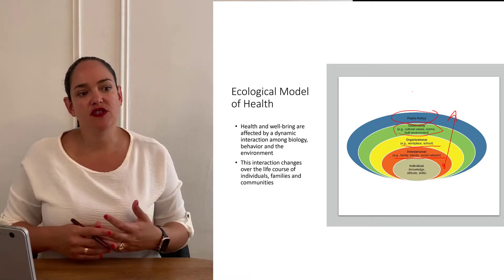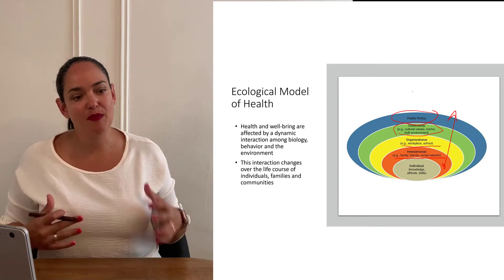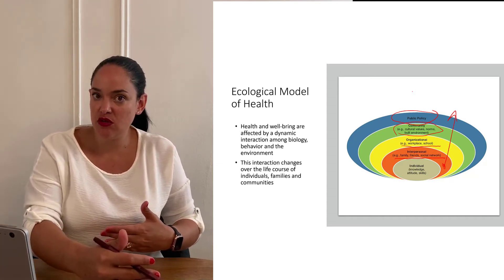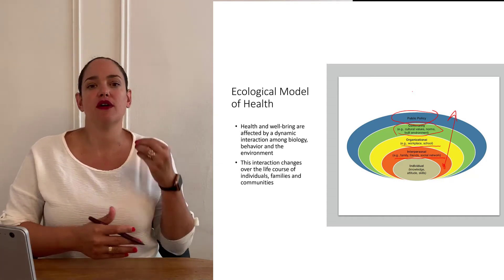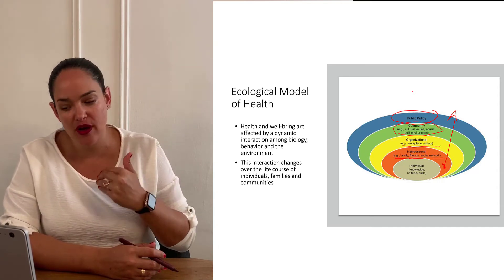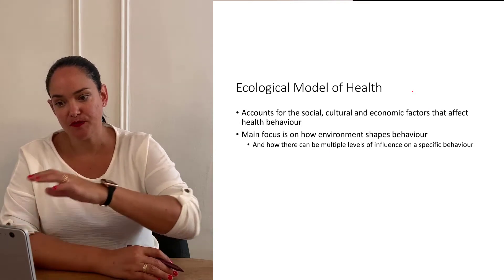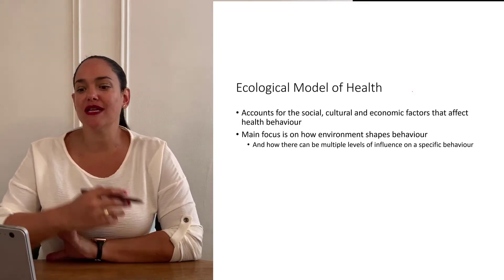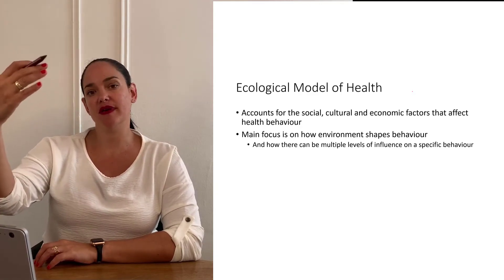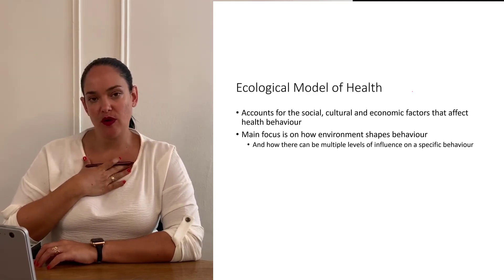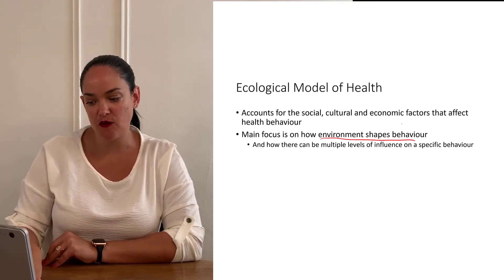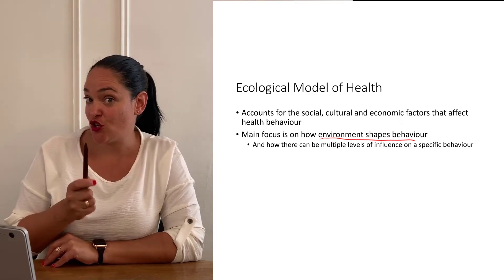It's not enough to just tell people what to do to be healthy. We want to create settings, from proximal to distal and distal to proximal, that make it easier for people to increase control over their health and improve it. The ecological model accounts for all of these more distal factors and environments that affect our health and well-being. The main focus of this model is how the environment shapes behavior.